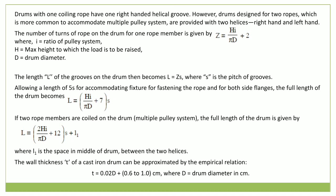The number of turns of the rope on the drum for one rope member is given by: Z = (H × i) / (π × d) + 2, where i is the ratio of the pulley system, H is the maximum height to which the load is to be raised, and d is the drum diameter. The number 2 is added to account for the extra turns to hold the rope on the drum. The length L of the groove on the drum is then: L = Z × S, where S is the pitch of the grooves. Allowing a length of 5S for accommodating the fixture for fastening the ropes and for both sides of the flange, the full length of the drum becomes: L = (H×i / π×d + 7) × S.